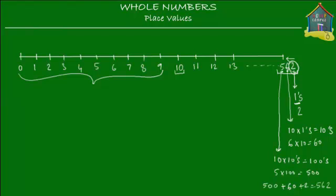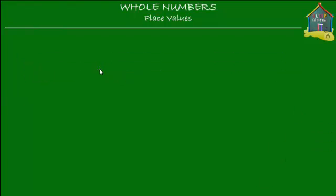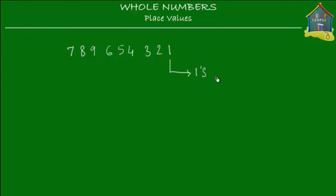Let me clear this slate and take a number — how about 7, 8, 9, 6, 5, 4, 3, 2, 1? Let's find out what the place and value of each of these digits is. Now we know that the 1 is the rightmost digit, so it's in the 1's place. Its value is 1 times 1, which is simply 1.